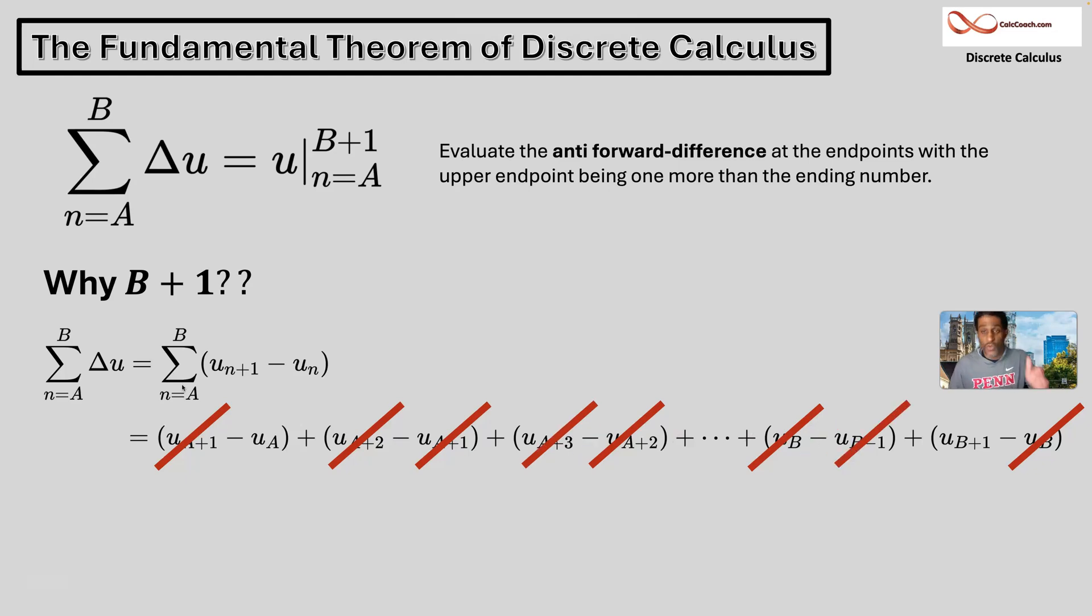U sub B cancels. U sub A plus three cancels, U sub B minus one will also cancel. We have one surviving term in the beginning, one surviving term at the end.